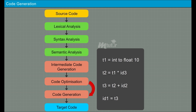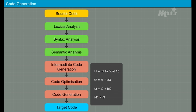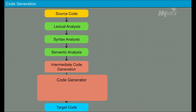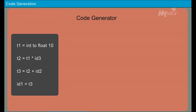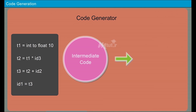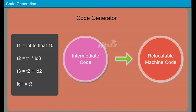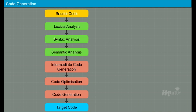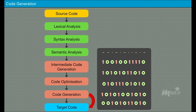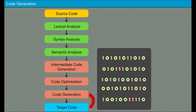The final phase of a compiler is the code generation phase. The optimized output from the previous phase is given as input for this phase. It translates the intermediate code into relocatable machine code. The length of the machine language program is reduced here, and the output of the code generation phase is the machine language program.